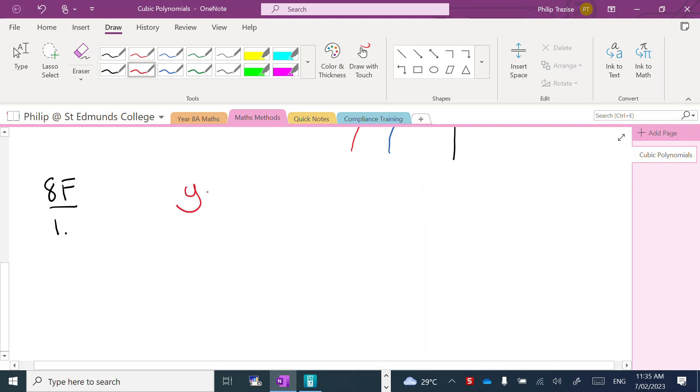So quick reminder: when we have the function a(x - alpha)(x - beta)(x - gamma), the alpha, beta, and gamma values represent the roots of the equation, and a is still the vertical dilation factor.